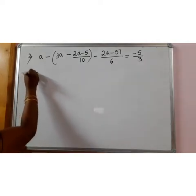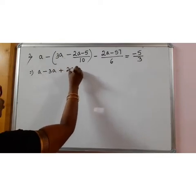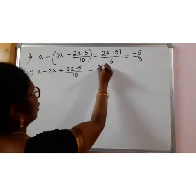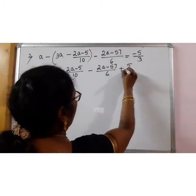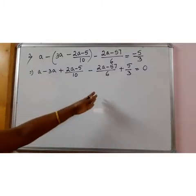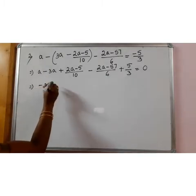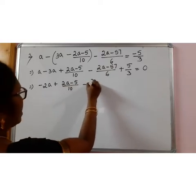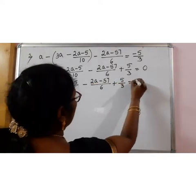First let me open the brackets. A minus 3a minus into minus plus 2a minus 5 by 10 here minus 2a minus 57 by 6. Let me bring this minus 5 by 3 also this side plus 5 by 3 is equal to 0. Because we are going to take LCM, it will be easy if we bring that one this side. So a minus 3a is minus 2a plus 2a minus 5 by 10 minus 2a minus 57 by 6 plus 5 by 3 is equal to 0.